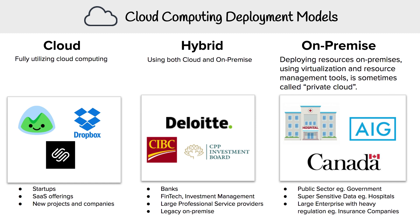Then you have hybrid. Hybrid is where you use a combination of both cloud and on-prem, connecting the two with hybrid services. We see a lot of banks using this, as well as FinTech or investment management, or even large professional service providers. A lot of the reasons why is that they can adopt cloud, but they have legacy on-premise environments, or some of their customers or clients are still not comfortable with cloud computing.